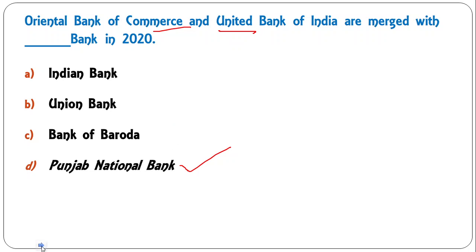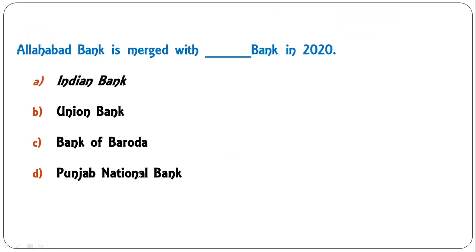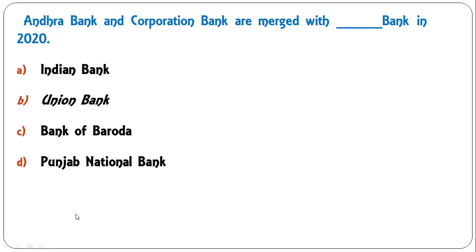Allahabad Bank merged with which bank in 2020? The correct answer is Indian Bank — Allahabad Bank is now merged with Indian Bank. Andhra Bank and Corporation Bank merged with which bank in 2020? Options are Indian Bank, Union Bank, Bank of Baroda, or Punjab National Bank. The correct answer is B — Union Bank. Andhra Bank and Corporation Bank are now merged with Union Bank.